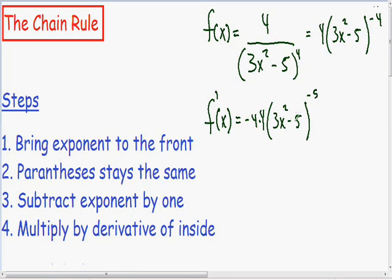So moving on to our last step, we have got to multiply by the derivative of the inside of the parenthesis. The inside of the parenthesis is 3x squared minus 5. The derivative of 3x squared minus 5 is just 6x, so I am going to multiply everything by 6x. Now we have taken the derivative using the chain rule.